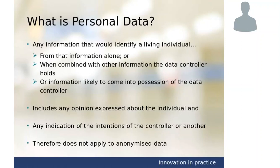If that piece of data can be combined with other information which the data controller has on another system, or even if they don't have it — if the data controller might at some point get hold of another piece of information which, by cross-referencing those two bits of information, would identify an individual — then the phone number alone would be personal data because it's possible to cross-reference it with other data in the future.